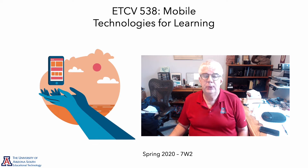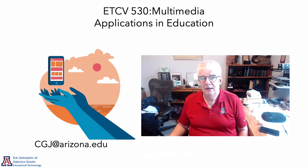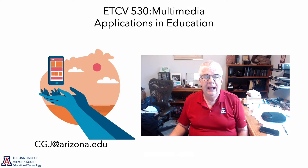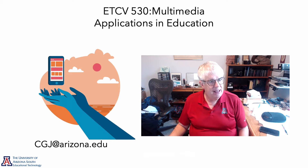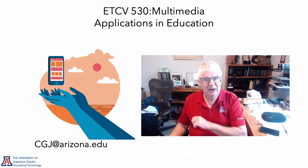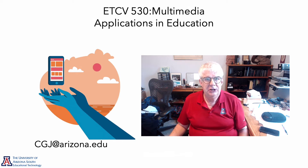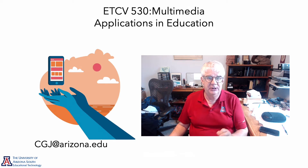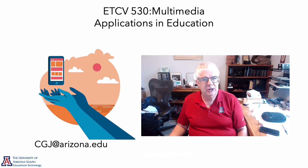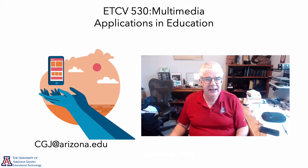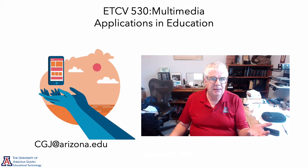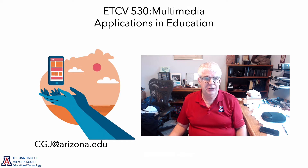First off, three ways to get in touch with me. First is through my email cgj at Arizona.edu. It used to be email.arizona.edu but we recently changed to where you can just do Arizona.edu. Also, please make sure it's a J and not an I — a lot of times people will see my email and think it's an I, but it's actually a J.